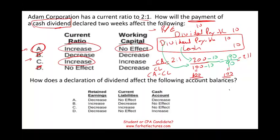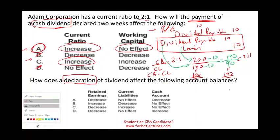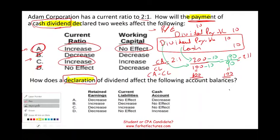On the exam, if you know your basics, you'll be able to answer this question quickly. Now let's take a look at the second question: How does a declaration of dividends affect the following accounts? Notice — in the first problem I asked about the effect of the cash payment, here they're asking about the declaration. You need to know the journal entry for the declaration.